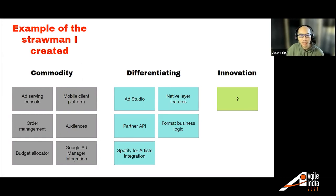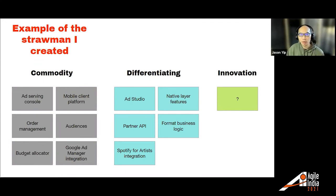Then differentiating things — things we know that if we get better at them, customers will pay more money for it. And innovation things — I wasn't quite sure what was there, so I just had a question mark.